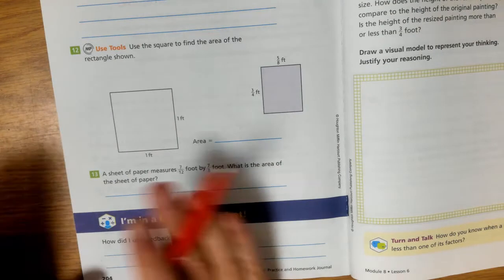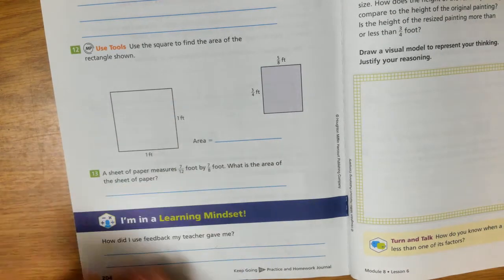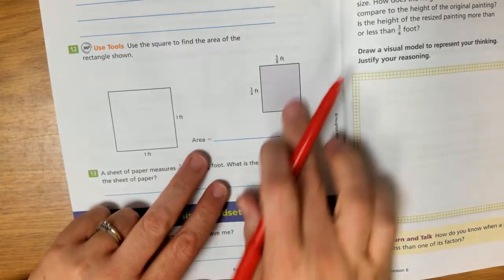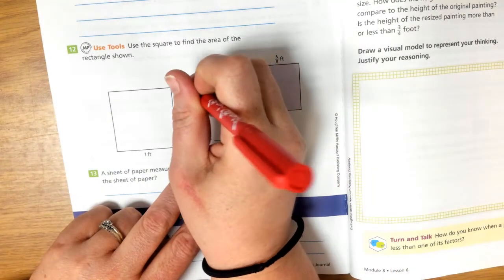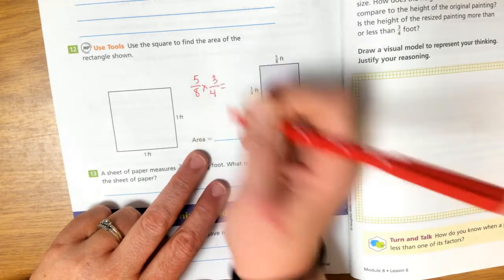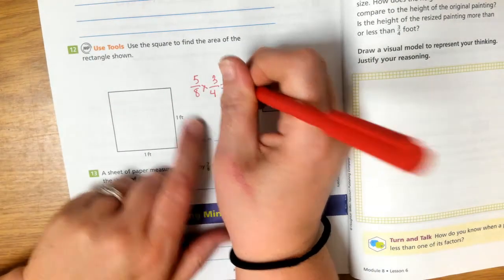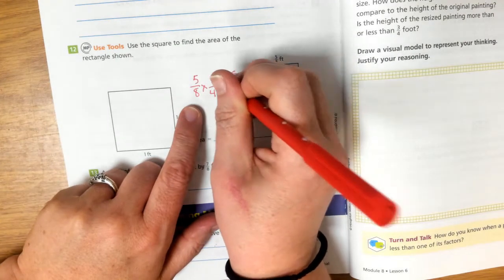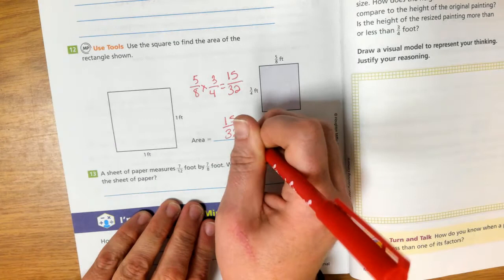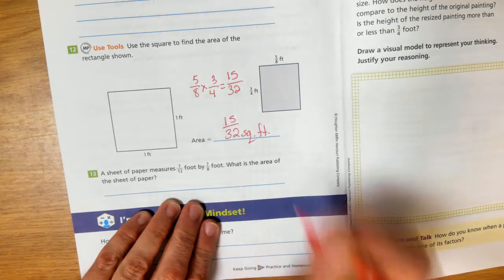Again, you do not need to do this. But if you want to, if this helps you, keeps you more comfortable and confident, go ahead. But we're going to be multiplying 5 eighths times 3 fourths. 5 times 3, 15. 8 times 4, 32. So we have 15 32nds square feet.